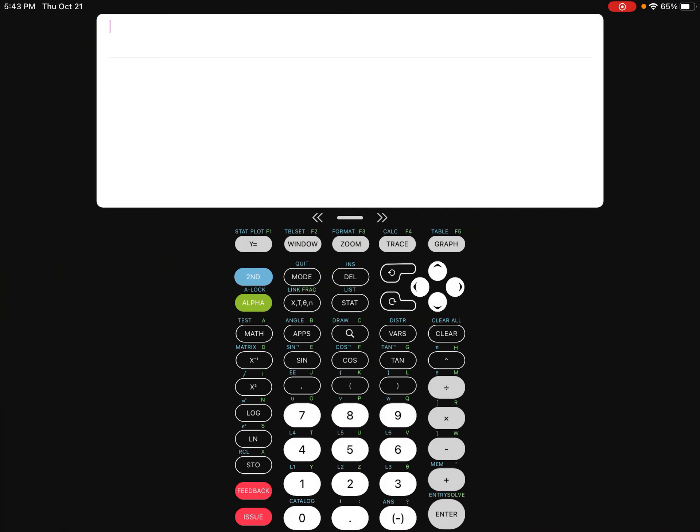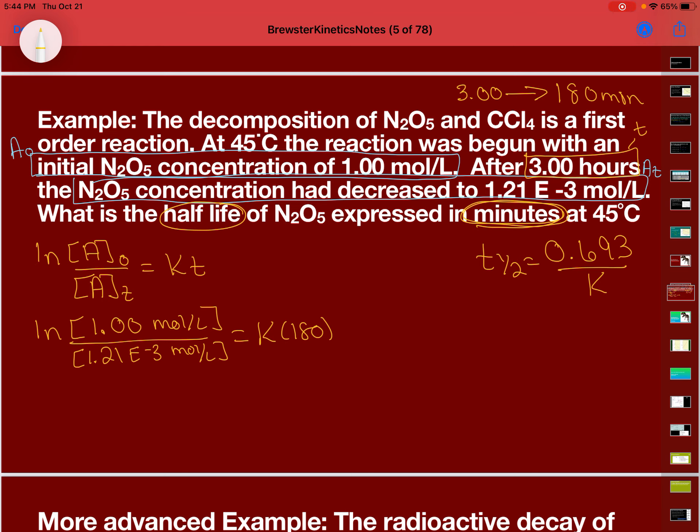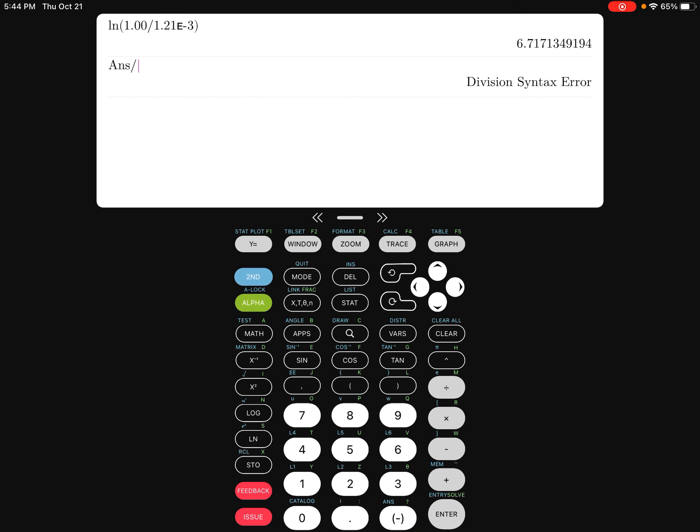So, let's go to our handy dandy calculator and we'll do natural log 1.00 divided by 1.21 E, which is a comma, negative. Oops. I did two of those. I'm going to check myself there. Okay. Negative 3. And I get 6.7. So, I get 6.7. And so, I got to divide by 180 to isolate my K. And I get 0.0373.